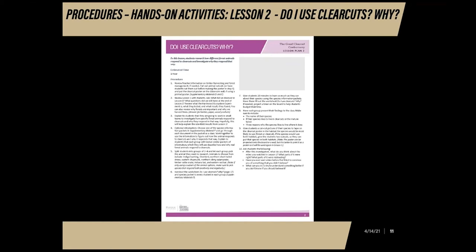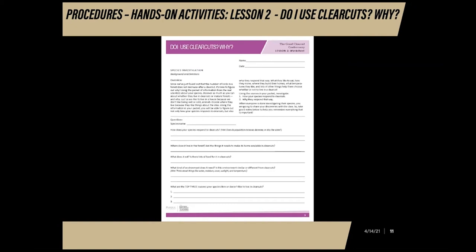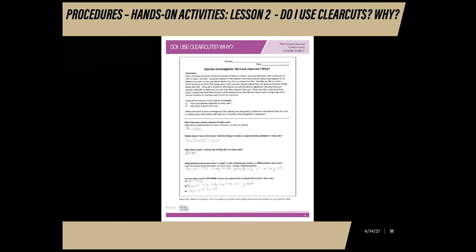Hand out the worksheet Do I Use Clear Cuts? Why? and a species packet to every student. Students will research from the packet to find answers about how the species responds, where it lives, what it eats, and what environment it prefers. They will need to decide if their species could live in a clear cut and explain why or why not. After completing the handout, students will present their findings to the rest of the class. Afterward, students will tape on the clear cut poster where that animal would most likely live. At the end, the class will be able to see where all the animals would live in the environments they prefer.